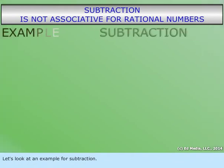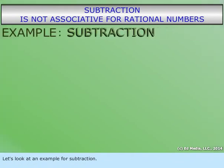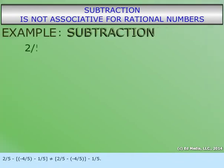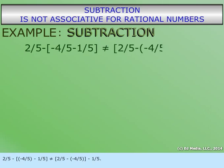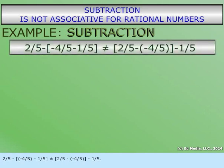Let's look at an example for subtraction. Two-fifths minus the quantity negative four-fifths minus one-fifth does not equal the quantity two-fifths minus negative four-fifths minus one-fifth.